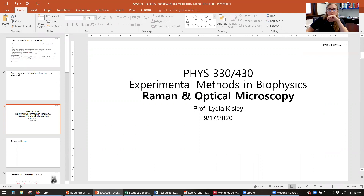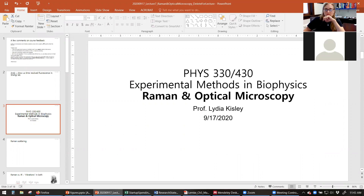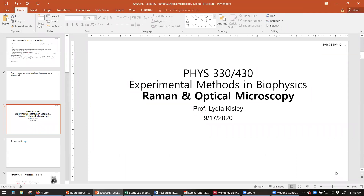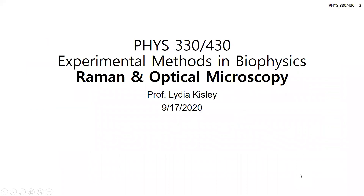Since we're a little bit behind, I want to jump right in. We're going to be going over Raman, which is inelastic scattering. If you remember last week, we talked about elastic scattering, where the wavelength of your incident light and the wavelength of your scattered light are the same. Raman is different from that. We'll be going over that from the perspective of bulk ensemble measurements in a cuvette, but also Raman is frequently used in microscopy, which will transition us into some details of optical microscopy.